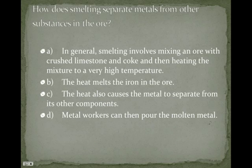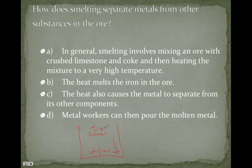Smelting involves mixing ore with crushed limestone and coke — not the soft drink, a different material — and then heating the mixture to a very high temperature. The heat melts the iron in the ore and causes the metal to separate from its components, allowing us to pour out the molten metal. In a container of molten material, higher-density material sinks to the bottom while lower-density material rises to the top. The unuseful material combines with the limestone and coke, sinking to the bottom, while the iron is found at the top and can be poured out.